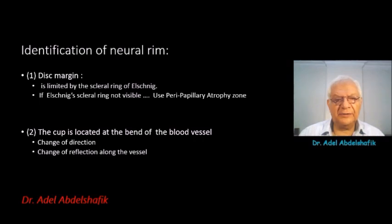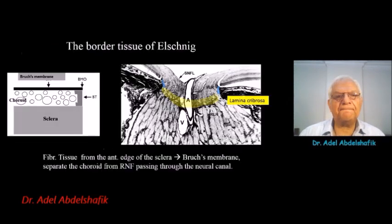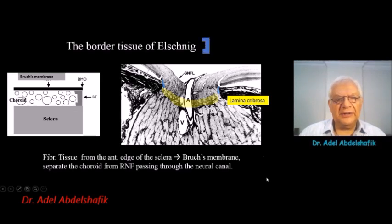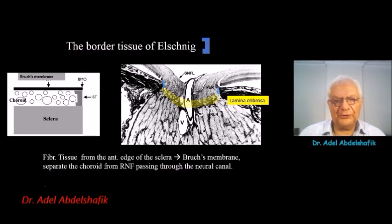Either you can see change of the blood vessel, whether you have a stereoscopic examination, or you can depend on change of reflection along the vessel. The bordered tissue of Elshning is a connective tissue extending from the sclera to Bruch's membrane, separating the choroid from the axons of the neurons passing in the optic nerve.